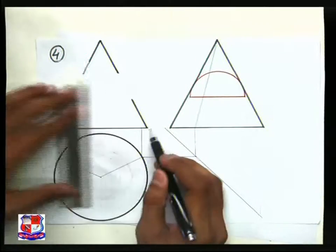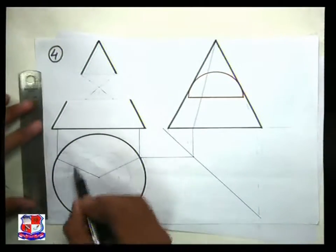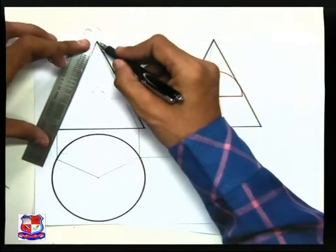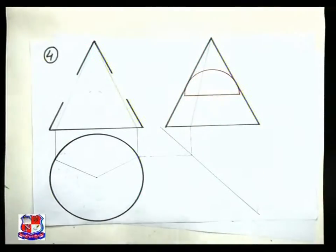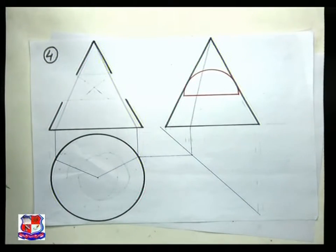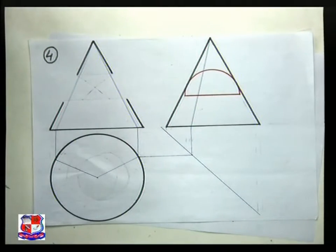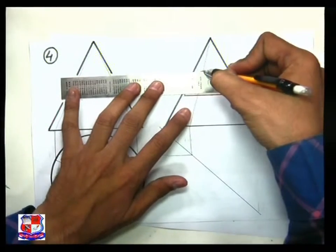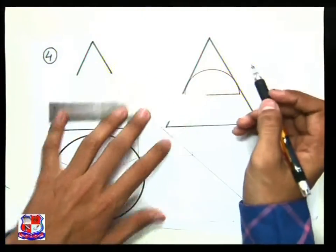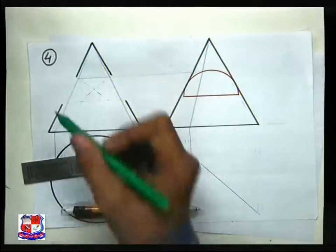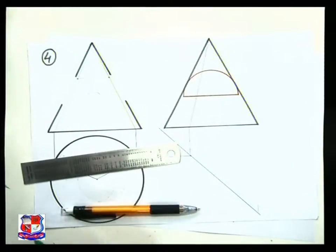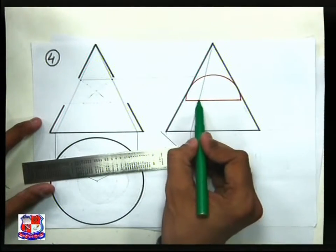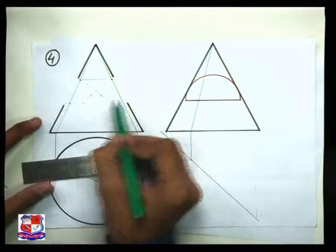Similarly, draw the same generator in front view — draw vertical lines from these two views and join this point with the apex point. We have drawn three views of this imaginary generator. Now to find out the points of intersection, pick up the point here on the semicircle. From that point, draw a horizontal line and that will cut these two generators at two points — one point here and another point here on that generator. Similarly, from another point, draw a horizontal line that will cut one point here, another point here.